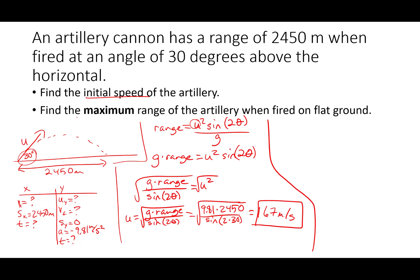So that's part one. Next, find the maximum range when fired on flat ground. Well, since I know the initial velocity, I could actually use SUVAT to solve it. But I could also just use the range equation because it's asking for the range. Range equals u squared sine 2 theta over g.